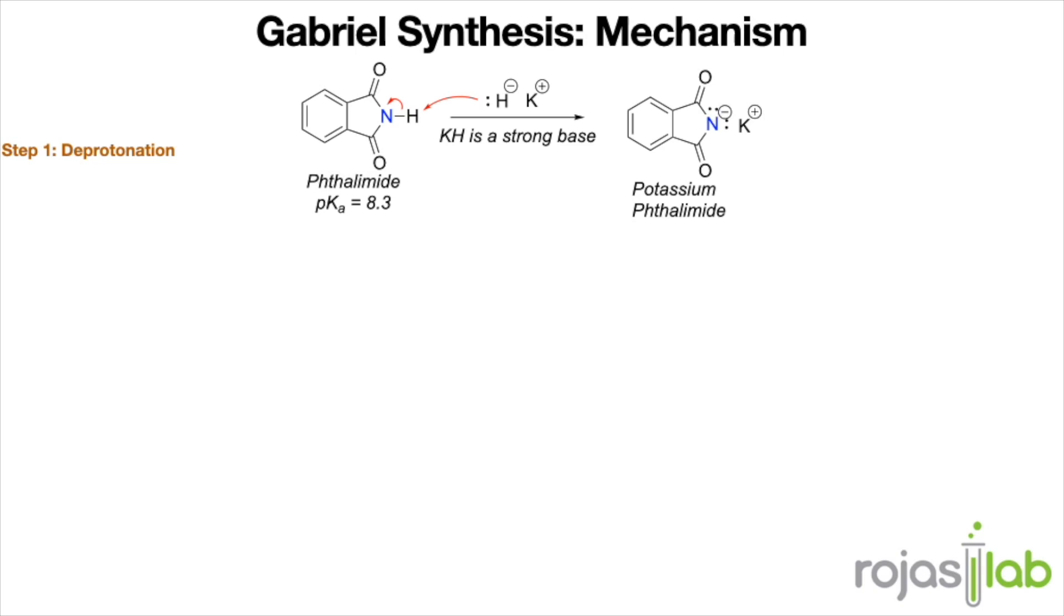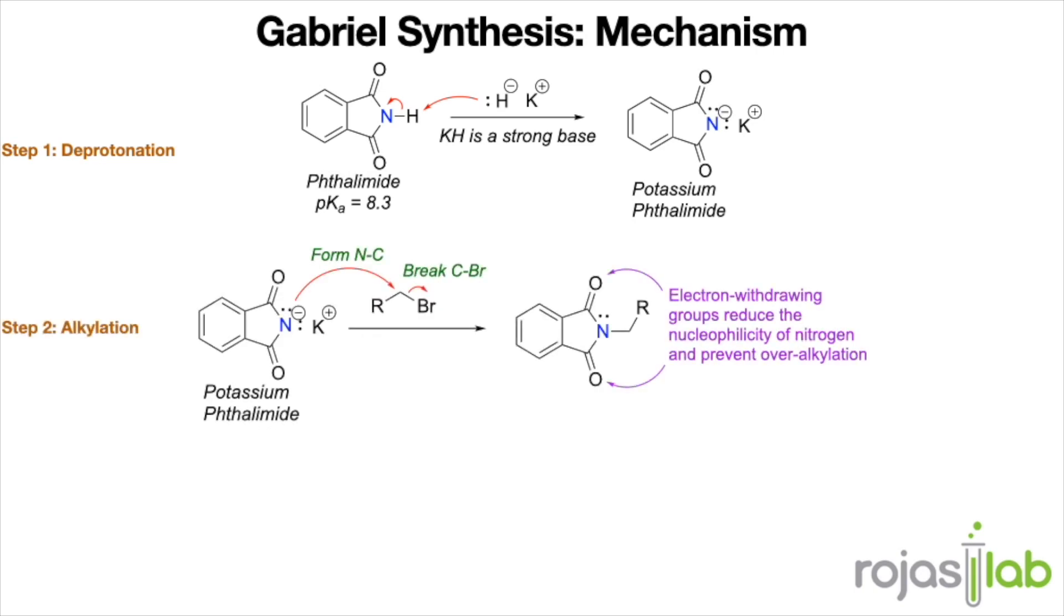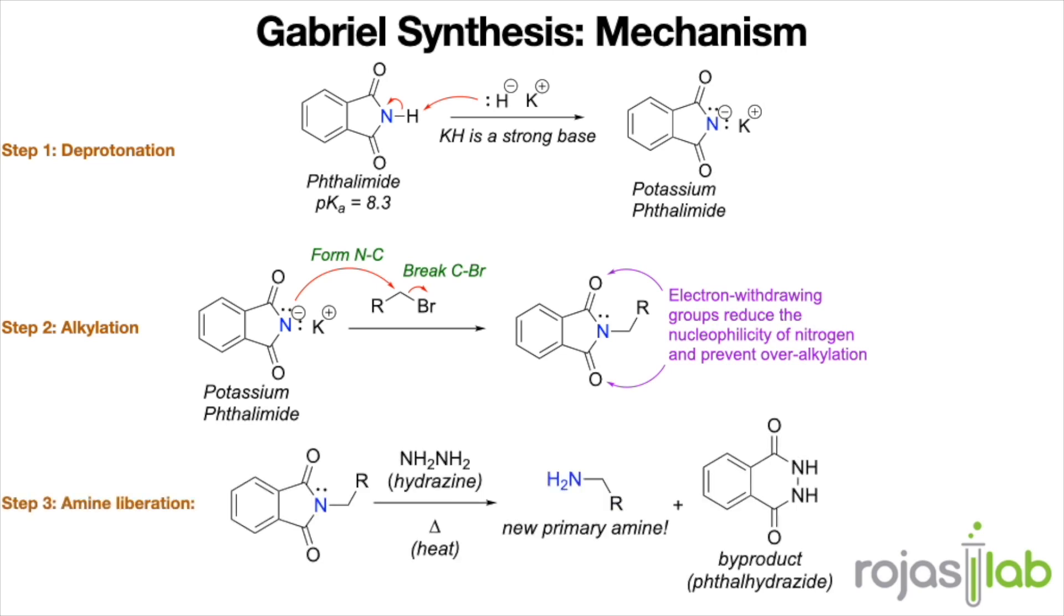Therefore, the first step is deprotonation, usually through the method of a strong base. This generates a newly formed salt or newly basic compound called potassium phthalimide. Once deprotonated, the next step is to add an alkyl halide. The nitrogen nucleophile will then attack the alkyl halide in an SN2 reaction to form a new nitrogen to carbon bond. The third step is to liberate the amine. This is done through the addition of hydrazine, which ends up adding to the carbonyl carbon. And through a sequence of steps, the amine ends up as the leaving group.